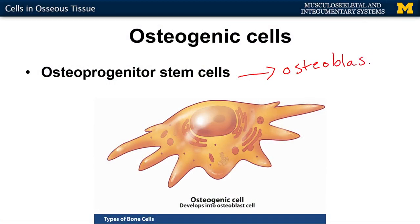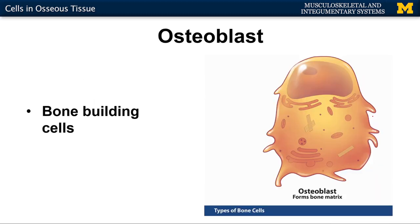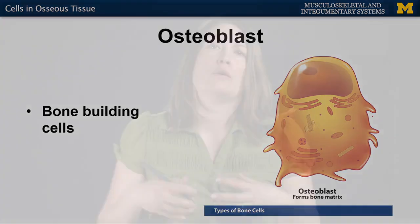The 'blast' suffix tells us this cell type is important in terms of the extracellular matrix. Osteoblasts are actually building the bone — building that extracellular matrix that will eventually ossify or calcify and create the hard bone we're familiar with. They're also found in higher densities at the outer edge of the bone and within the medullary cavity.